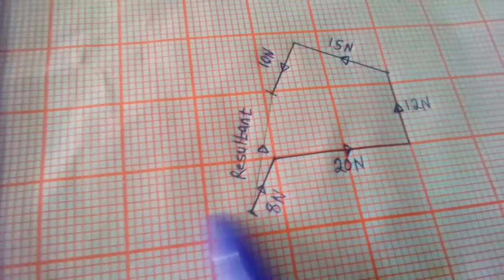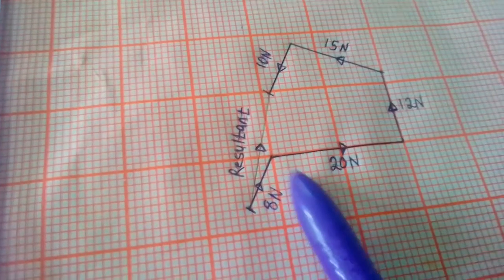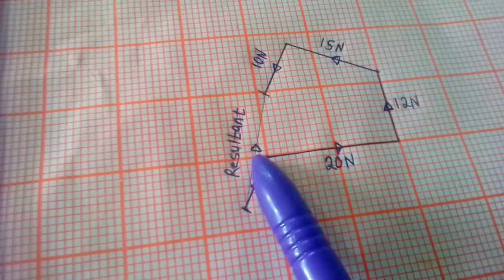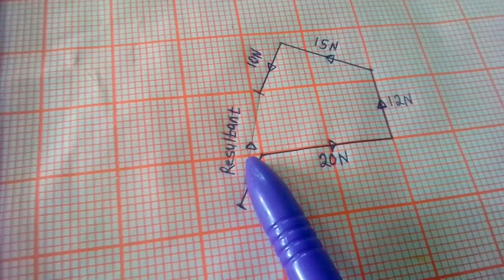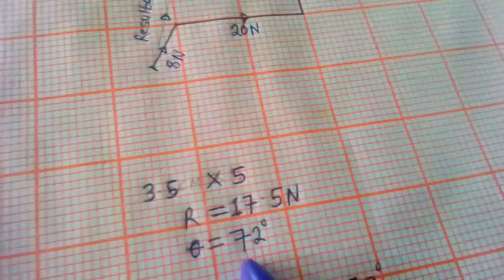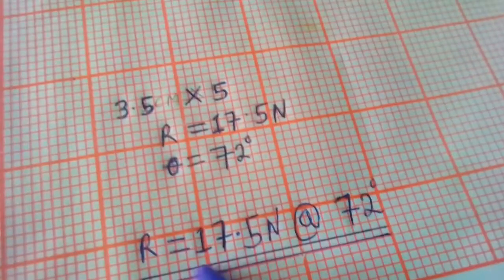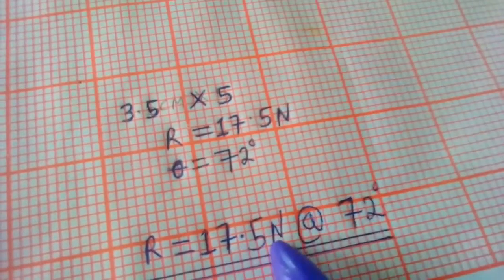You can also measure the angle by placing your protractor here and measuring the angle at which the resultant is positioned. If you do that, you are going to get 72 degrees. So our resultant force is 17.5 Newton at 72 degrees.